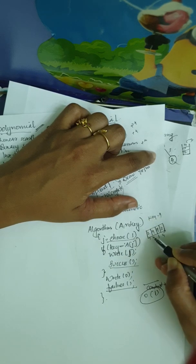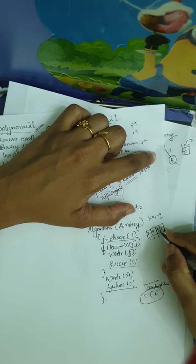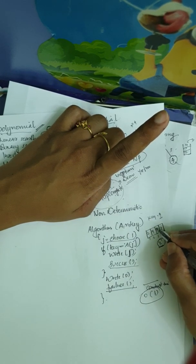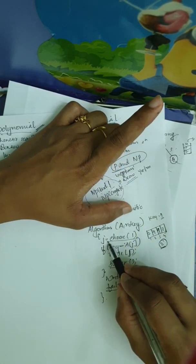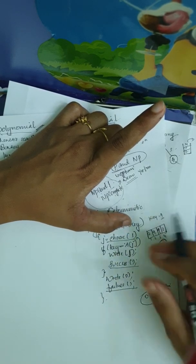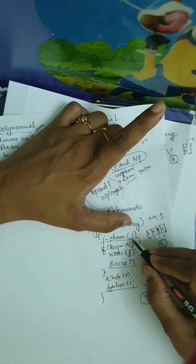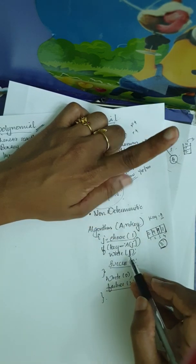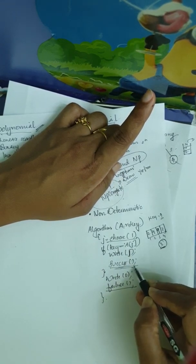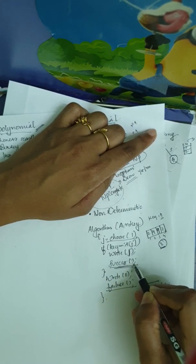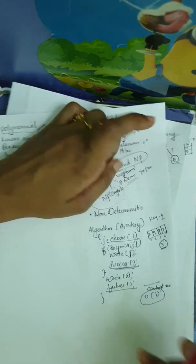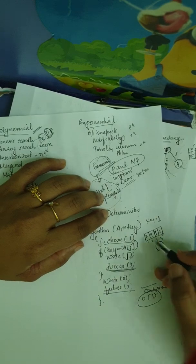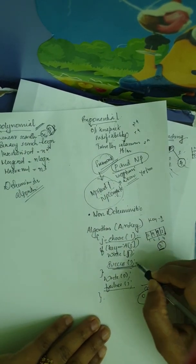The key value is 9. You can search for 9. In a non-deterministic algorithm, the search directly selects the index where 9 is present in the array. That means j is chosen such that A[j] equals 9. If that index is found, it is a success. Each step takes Big O of 1, so the total time complexity is also Big O of 1.